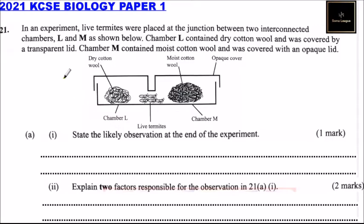Question number 21. In an experiment, live termites were placed at the junction between two interconnected chambers, L and M, as shown below.